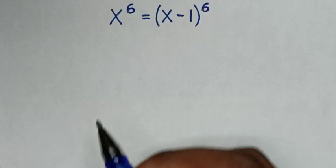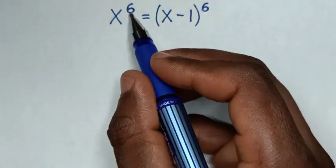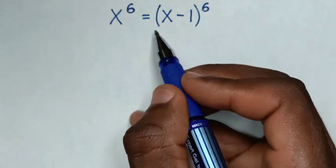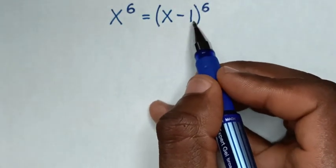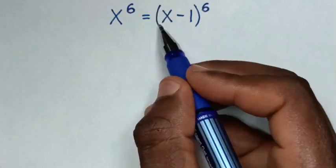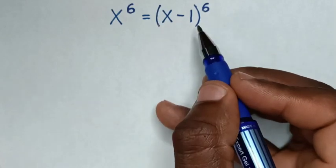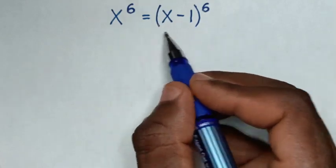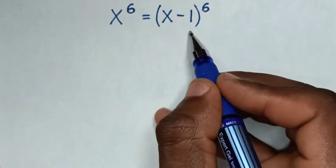Hello! How to solve x to the power of 6 equals (x minus 1) to the power of 6, to find the values of x from this equation.